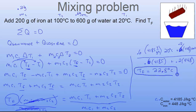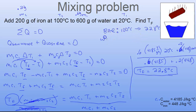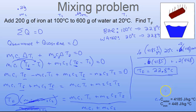That number makes sense. We put the hot bar in the water and the bar cooled from 100°C down to 22.8°C. Energy always goes from hot to cold — it did that. The water started at 20°C and warmed up to 22.8°C. They met in the middle. Water has a really high heat capacity — it's almost 10 times harder to heat water than iron — which is why the temperature didn't go up very much.